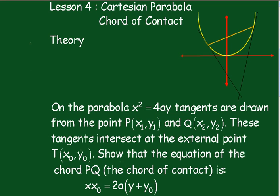Tangents are drawn from the point P(x₁, y₁) and Q(x₂, y₂). These tangents intersect at the external point T(x₀, y₀). Show that the equation of the chord PQ, which is called the chord of contact, this one here, is xx₀ equals 2a into y plus y₀.